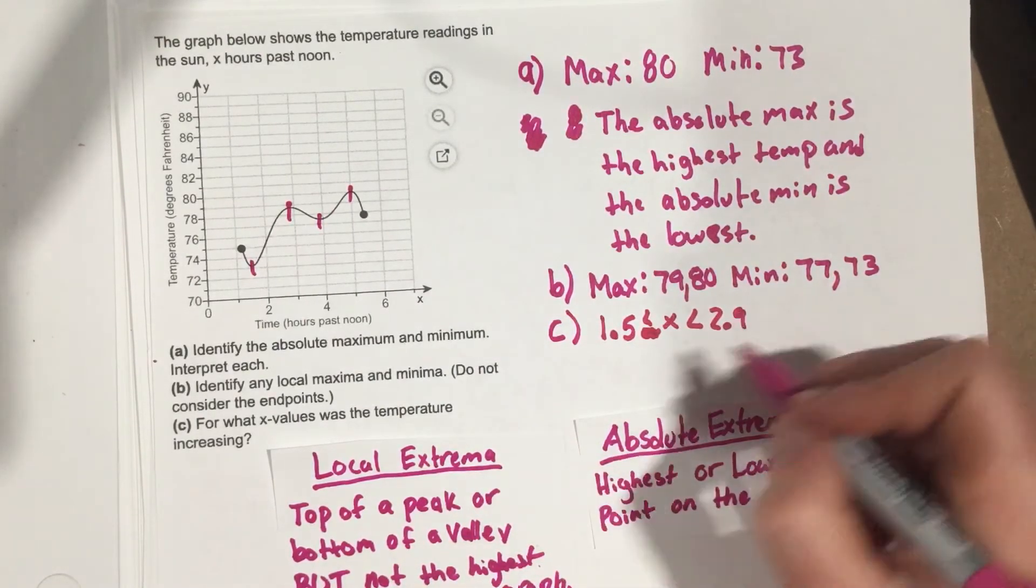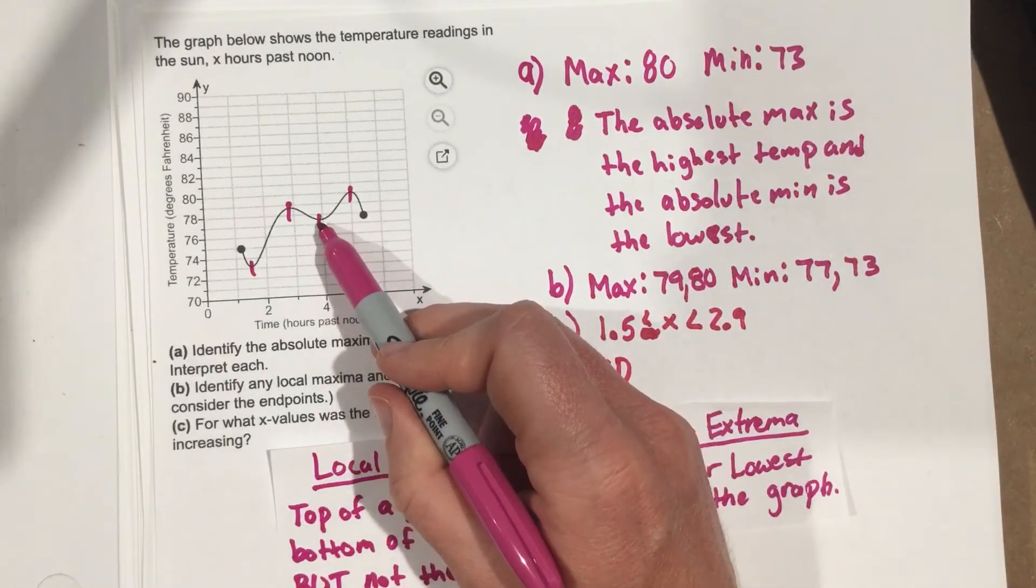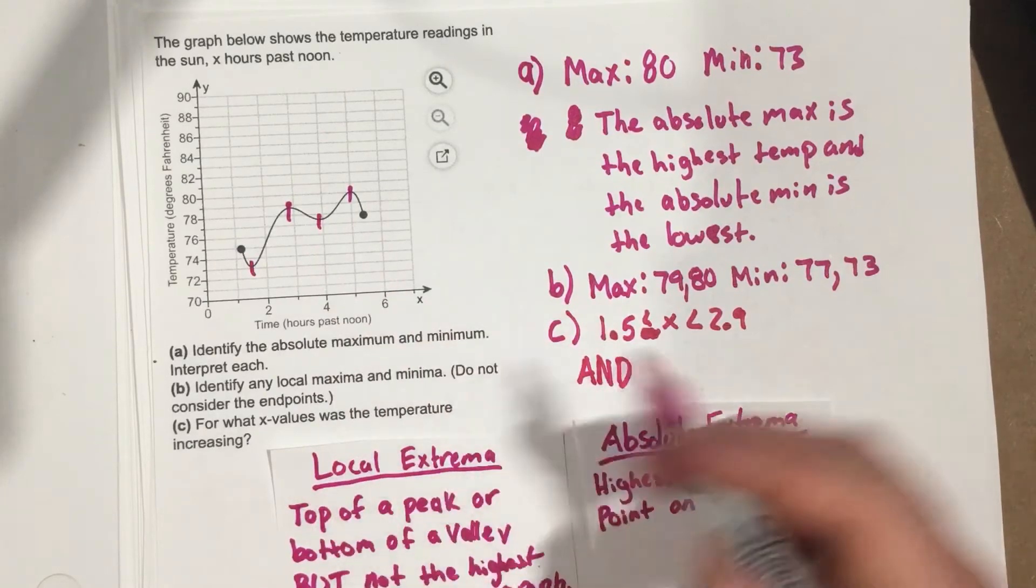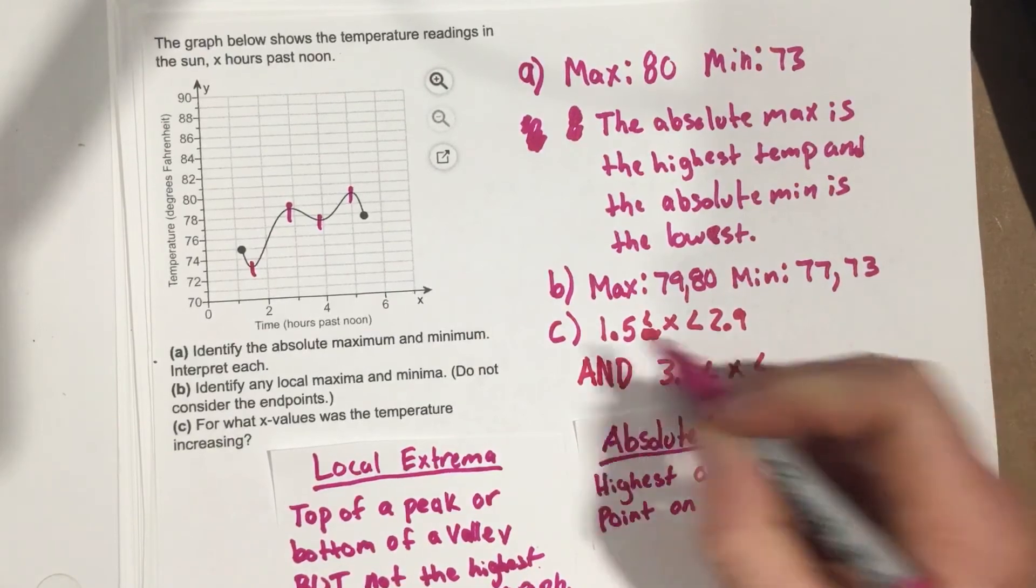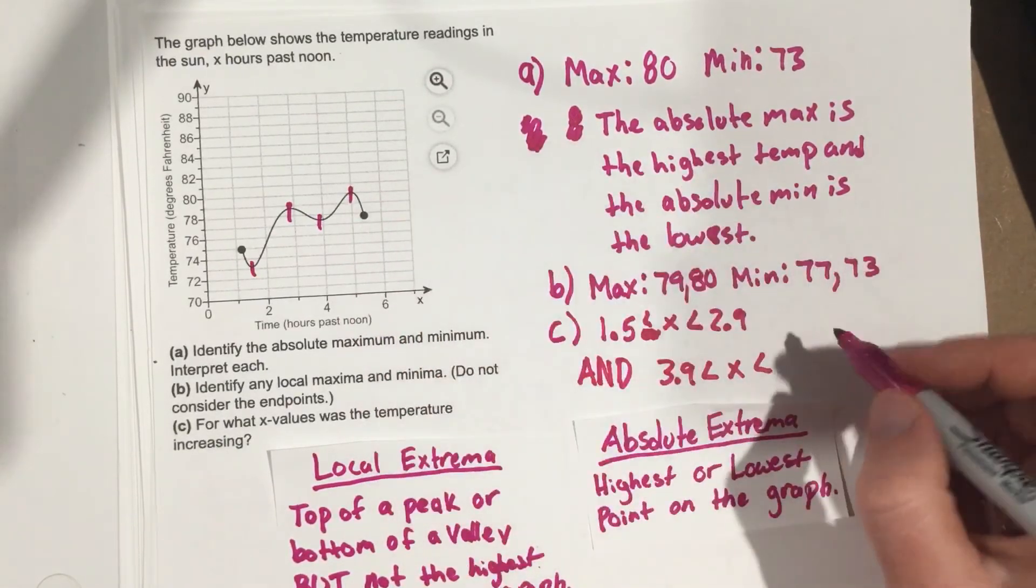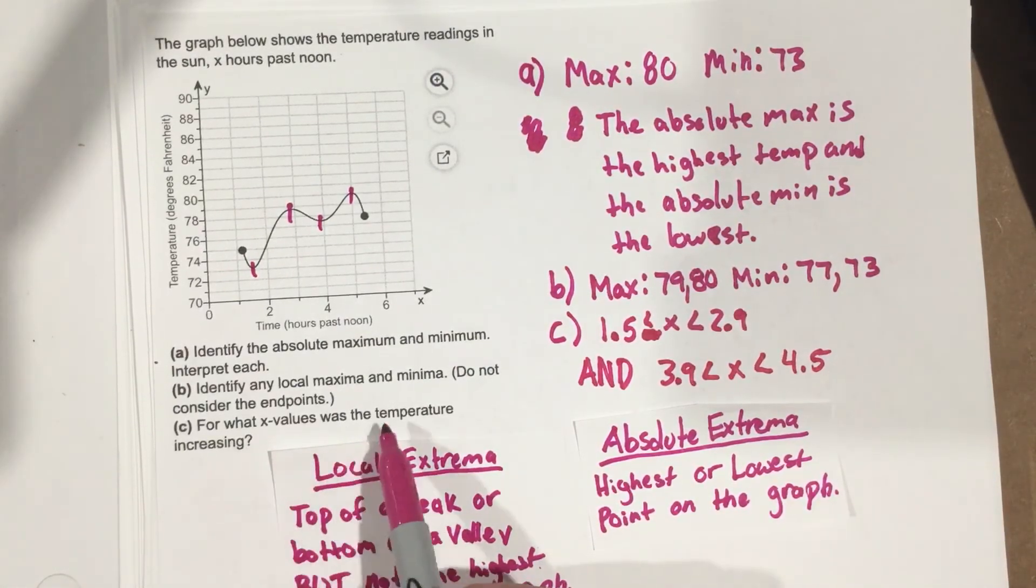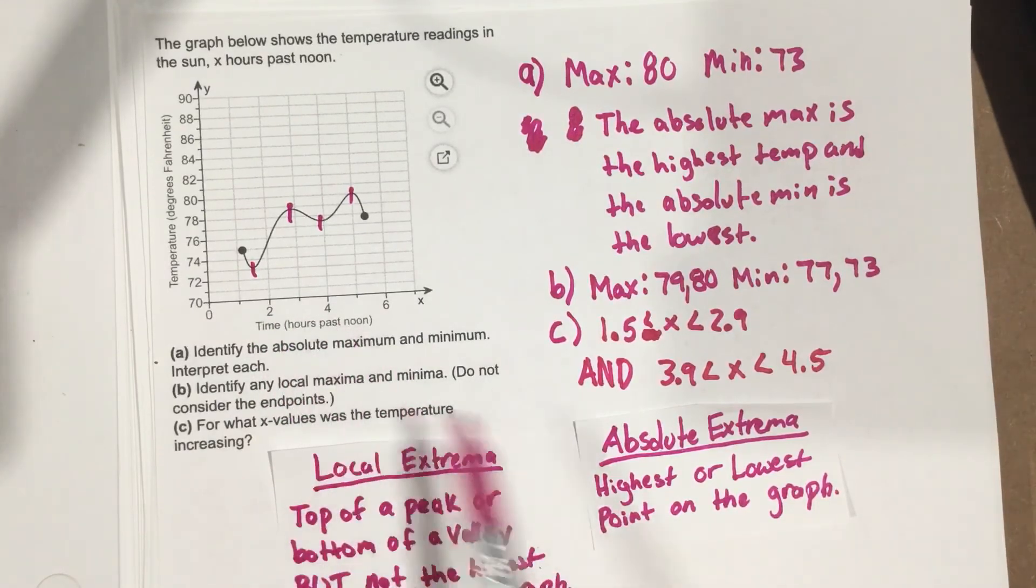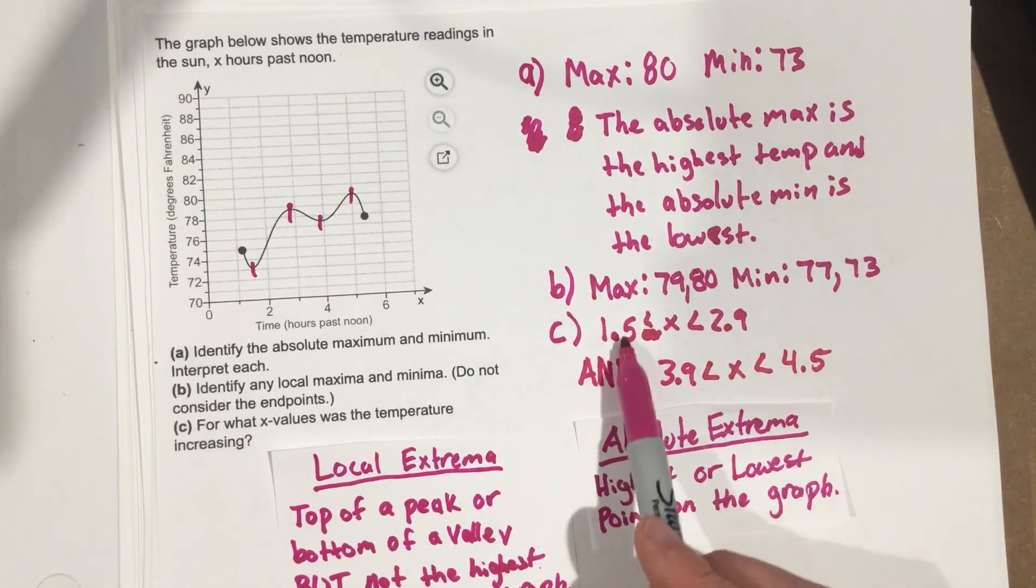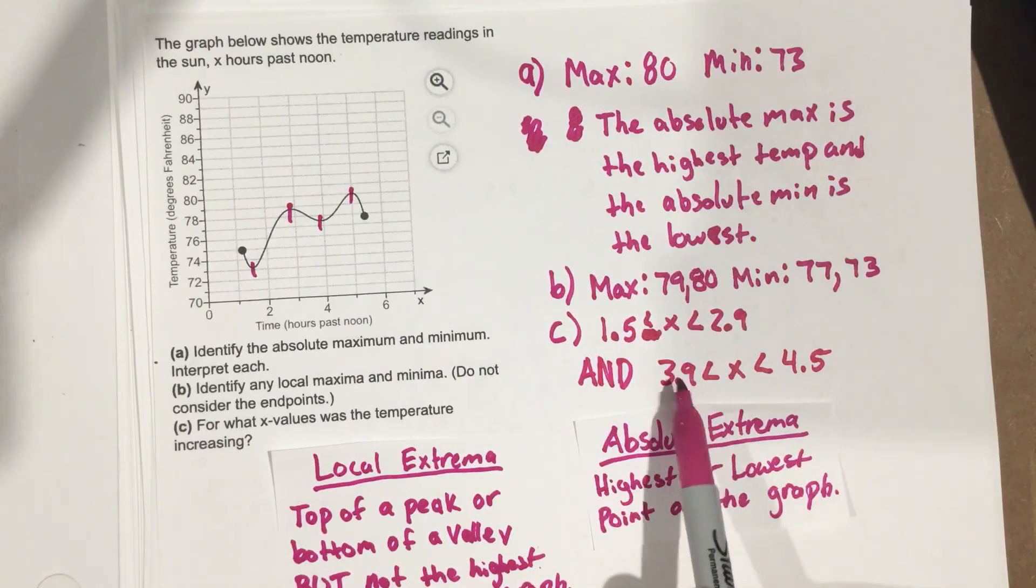And then it also increases from about 3.9 < x < 4.5. So the temperature was increasing from 1.5 to 2.9 and from 3.9 to 4.5. Remember, these are hours past noon, so from about 1:30 to 3:00, and from around 4:00 to 4:30.